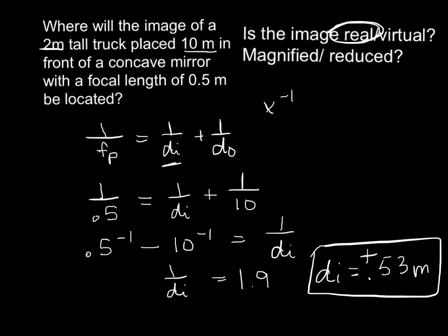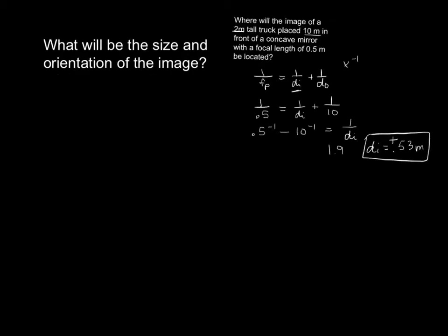Now then the question magnified or reduced, that's a little bit trickier. To find out if it's magnified or reduced, we're going to use the magnification equation. So the magnification equation says that the magnification is negative DI over DO. So our DI is 0.53, and our DO was the 10 meters in front of 10 meters. So that's going to give us a magnification of 0.053.